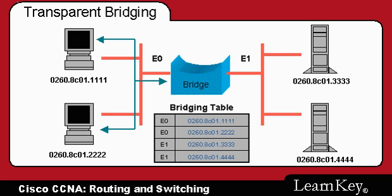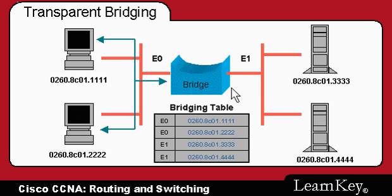Here's how bridges learn the locations of the hosts that they're supposed to intelligently forward frames to. We can see various Ethernet addresses on our local area network, which is separated by a bridge. By learning where frames are being transmitted from, our bridge has picked up that these two MAC addresses are located on Ethernet 0, and these two MAC addresses are located on Ethernet 1.